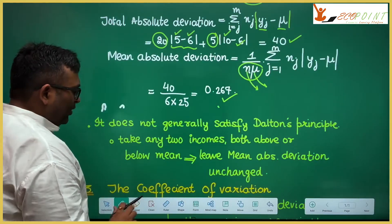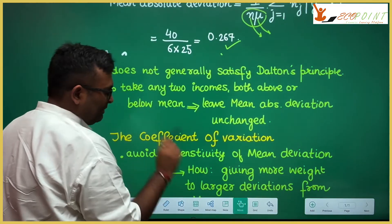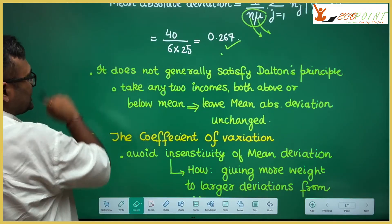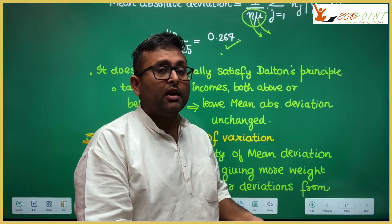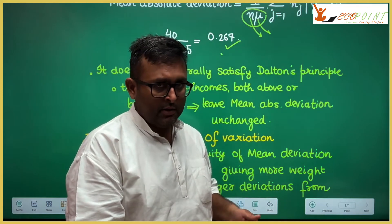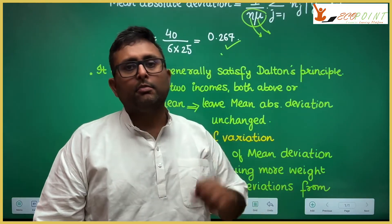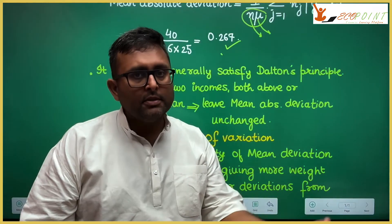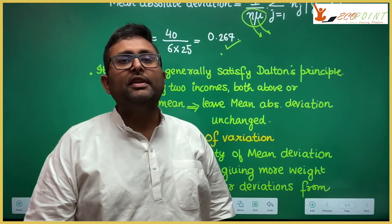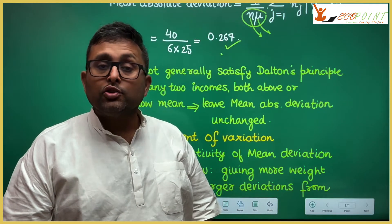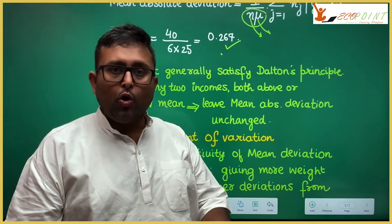One important thing to remember is that mean absolute deviation does not generally satisfy Dalton's principle. Dalton's principle states that if you transfer income from a poorer class to a richer class, inequality should increase. However, if you take two incomes both above the mean, or both below the mean, and transfer between them, there is no change in mean absolute deviation — so the principle doesn't always hold.